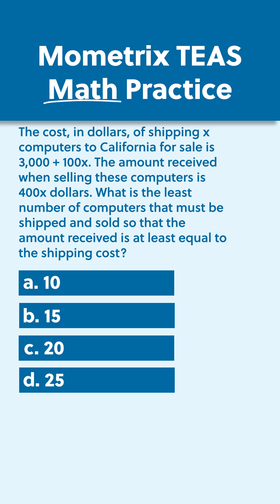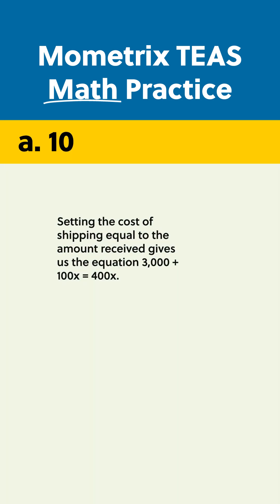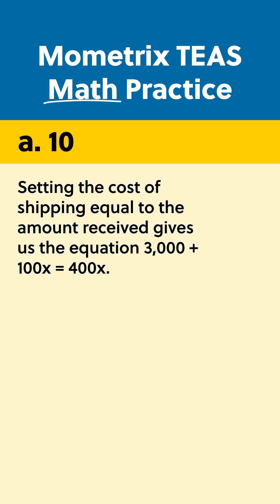The correct answer is A. Setting the cost of shipping equal to the amount received gives us the equation 3,000 plus 100X equals 400X.